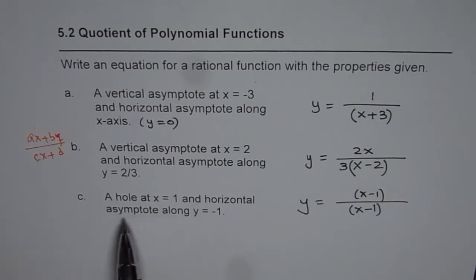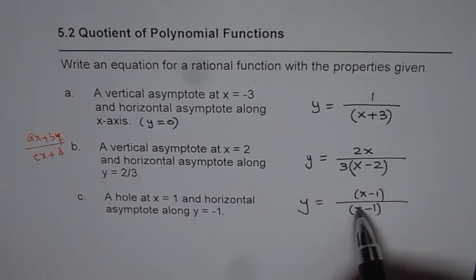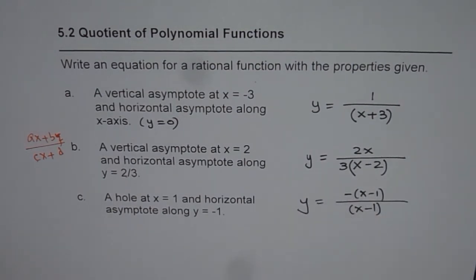Now we need horizontal asymptote along y equals minus 1. Now these degrees are same, but y asymptote will be plus 1 in this case. So if I write minus here, I get minus 1. So that equation will give us horizontal asymptote along y equals minus 1.